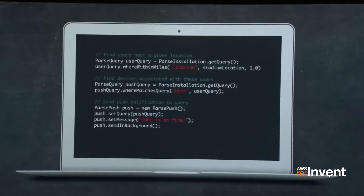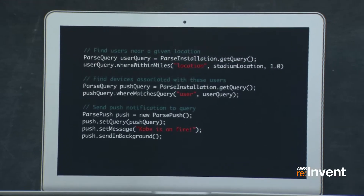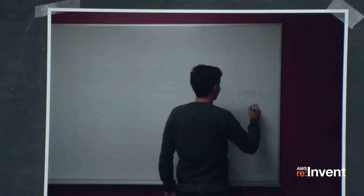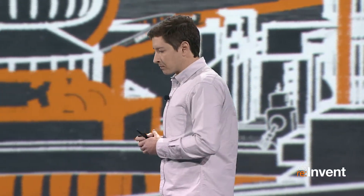We weren't always powering major sports teams — we started small. In the beginning we had one AWS instance. We put together our beta in three weeks; we had no clue if this was going to work. We just wanted to see what happened, and we didn't want to invest too much. So we started with one AWS instance.